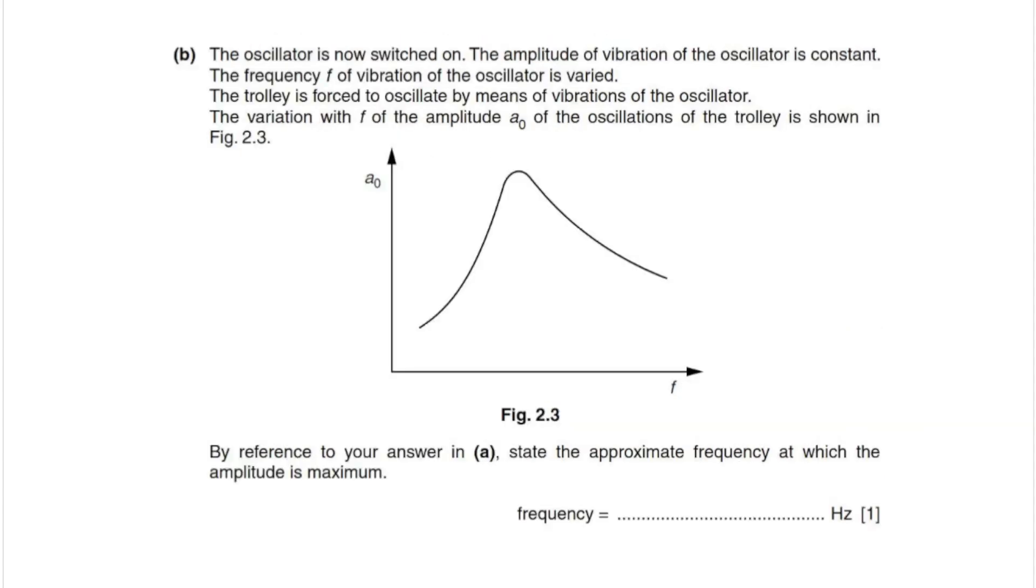For part B, the oscillator is now switched on. The amplitude of vibration of the oscillator is constant. The frequency at which the trolley was moving with maximum amplitude was calculated to be 2.5, so the answer here will also be 2.5.